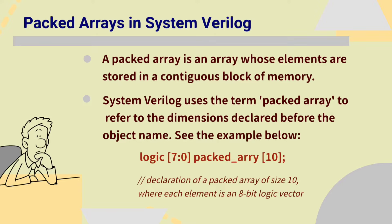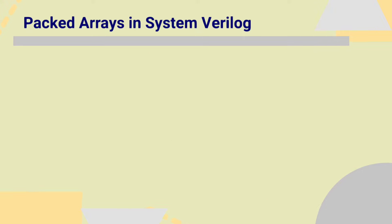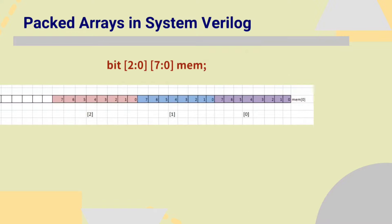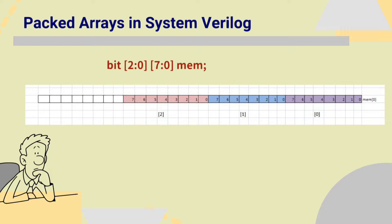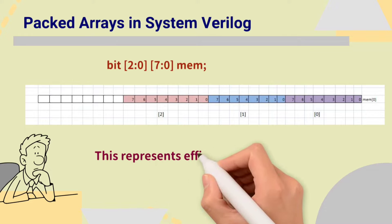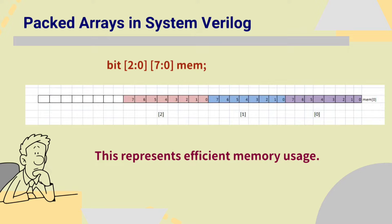If we see this example — logic [7:0] packed_array[10] — here we are declaring a packed array of size 10 where each element is an 8-bit logic vector. Another example: bit [2:0][7:0] mem — after mem nothing is specified, meaning a single row of the memory location. [7:0] means each element is 8-bit, and [2:0] means those 8 elements are replicated 3 times. This represents efficient use of memory because all the bits are placed back to back without any gaps.